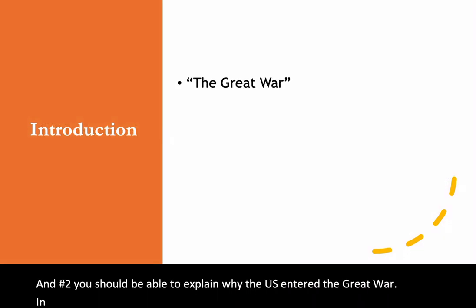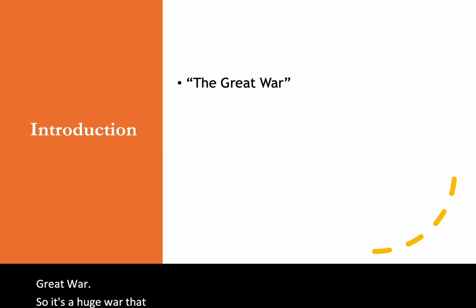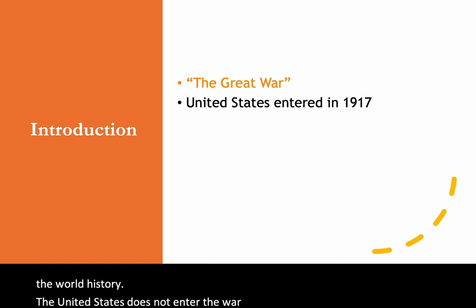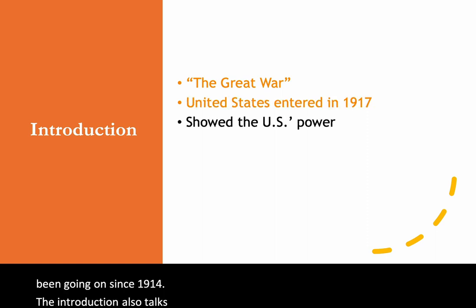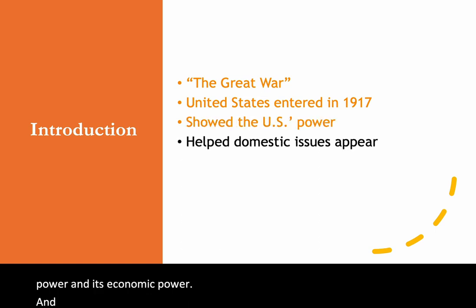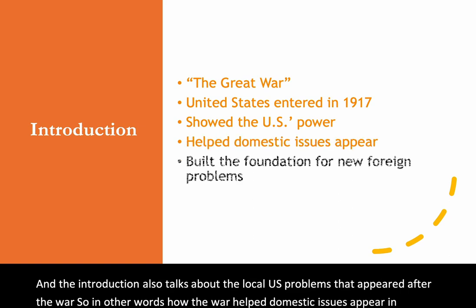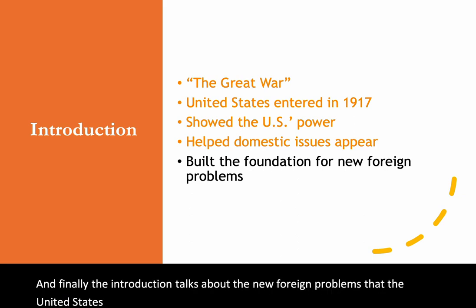In the introduction, the authors talked about why World War I is called the Great War. It's a huge war that involves a lot of countries — it's the first major world war in the world's history. The United States does not enter the war until 1917, even though the war had been going on since 1914. The introduction also talks about how the United States showed its military and economic power, the domestic issues that appeared after the war, and the new foreign problems the United States was going to have after World War I.